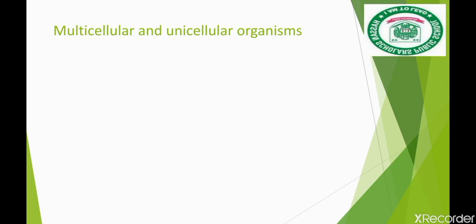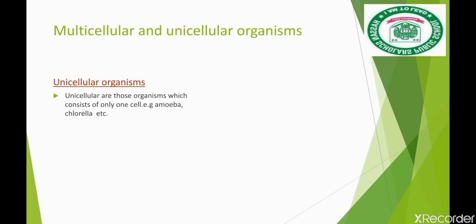We can see that multicellular and unicellular organisms are very different. Multicellular organisms consist of many cells, while unicellular organisms are those organisms which consist of only one cell.